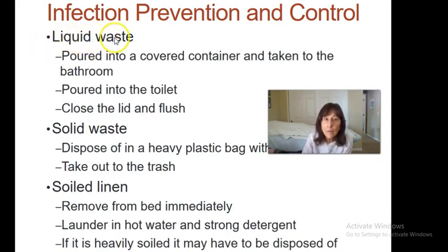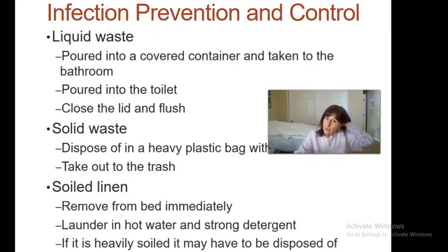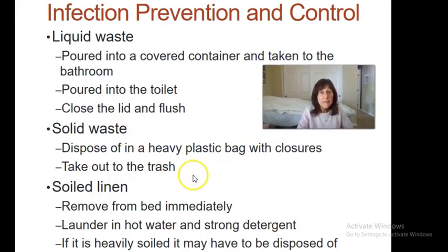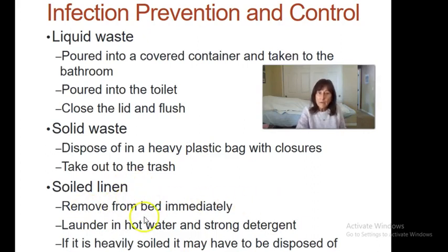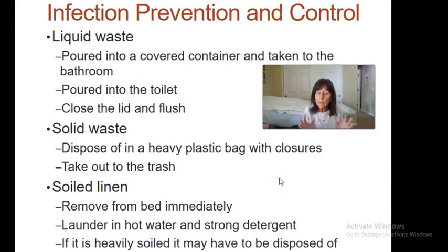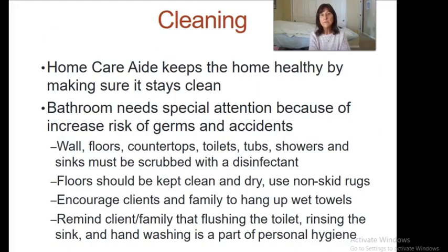For liquid waste such as diarrhea or urine, use a covered container going room to room; commodes should be covered, poured into the toilet, lid closed, and flushed. For solid waste, use heavy plastic bags and take out the trash. For soiled linens, remove them from the bed and launder in the hottest water the instructions allow with detergent. Heavily soiled items may need to be cleaned separately with gloved hands or disposed of.